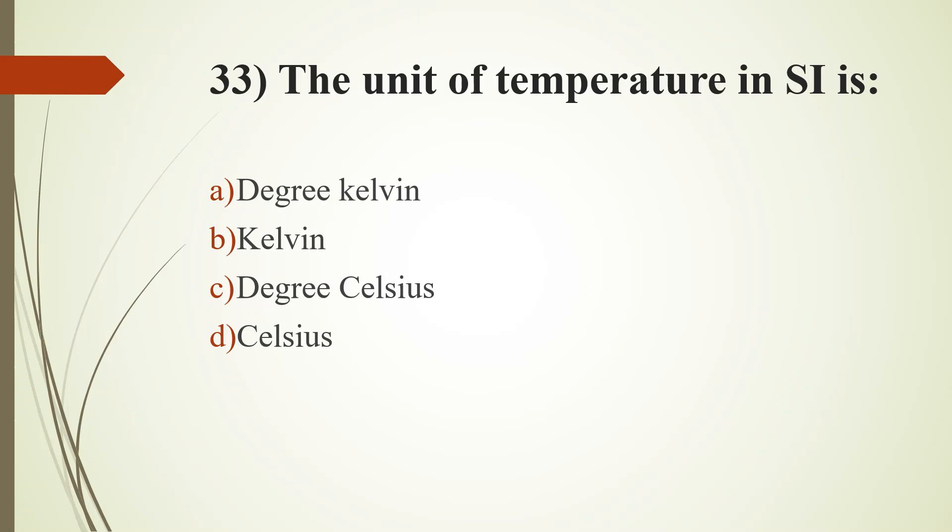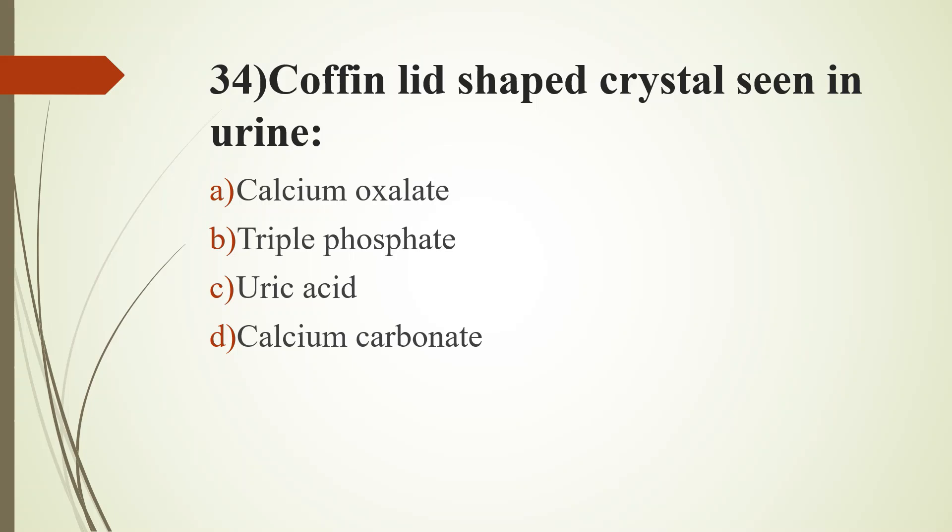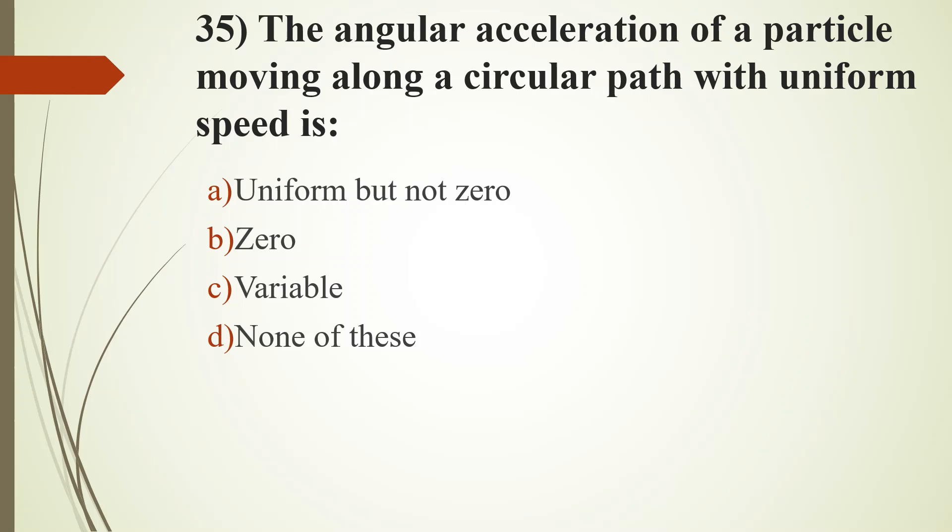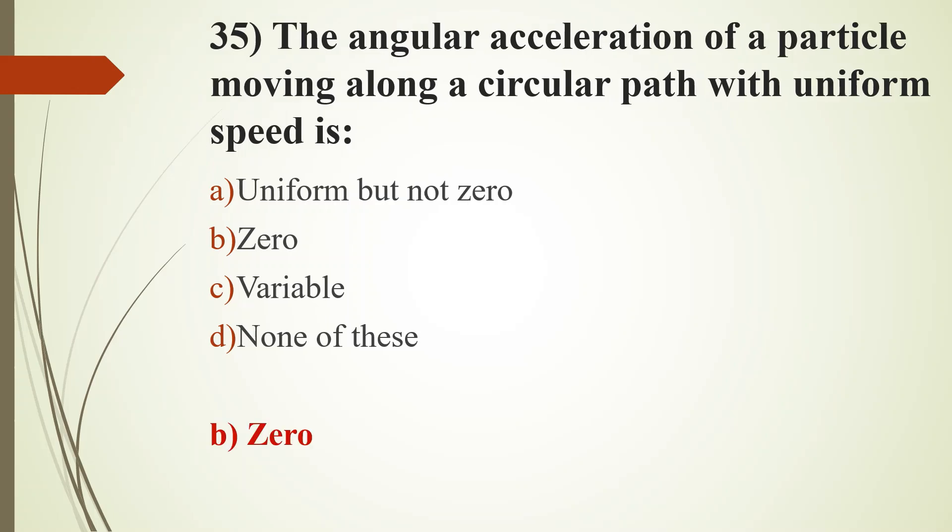Question number 33. The unit of temperature in SI is: option A, degree Kelvin; option B, Kelvin; option C, degree Celsius; option D, Celsius. Answer is option B, Kelvin. 34th question. Coffin lid shaped crystal seen in urine: option A, calcium oxalate; option B, triple phosphate; option C, uric acid; option D, calcium carbonate. Answer is option B, triple phosphate. 35th question. The angular acceleration of particle moving along a circular path with uniform speed is: option A, uniform but not zero; option B, zero; option C, variable; option D, none of the above. Answer is option B, zero.